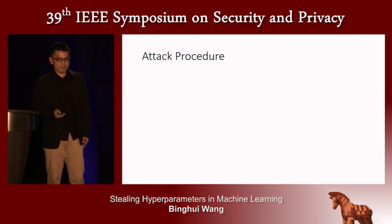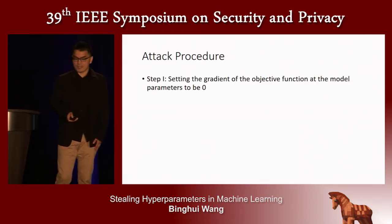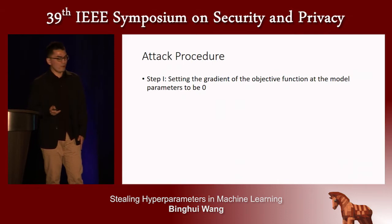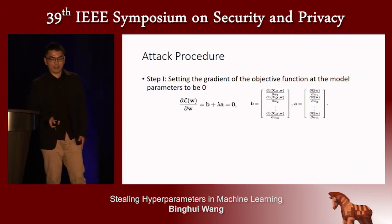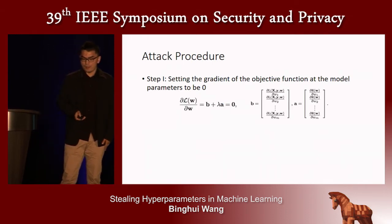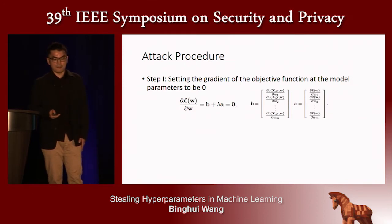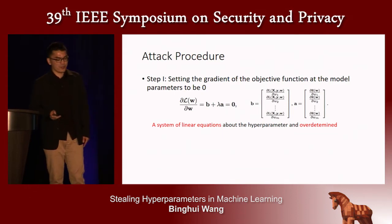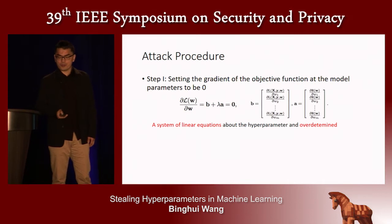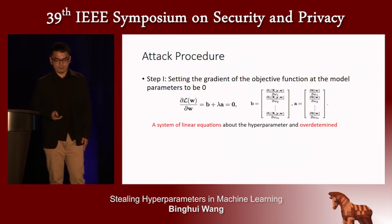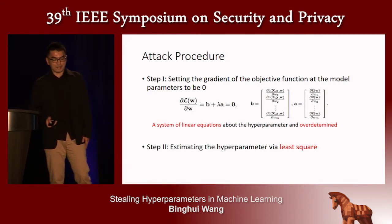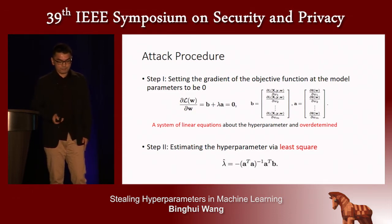The attack consists of two steps. In step one, we set the gradient of the objective function at the model parameters to zero, yielding a system of linear equations about the hyperparameters. For different machine learning algorithms, the form of A and B differs, and the number of equations exceeds the number of hyperparameters, making the system over-determined. In step two, we use the least squares method to estimate the hyperparameters.